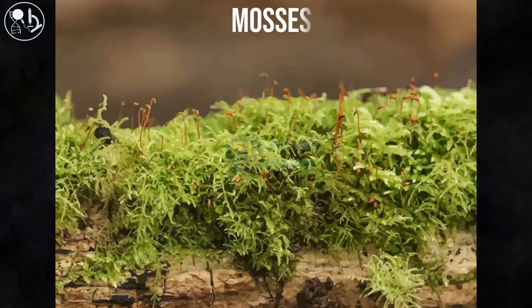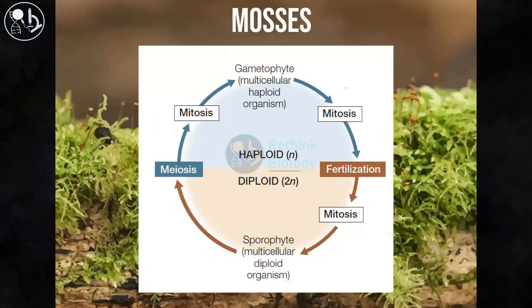The lifecycle of a moss is characterized by an alternation of generations. A diploid generation called the sporophyte follows a haploid generation called the gametophyte.